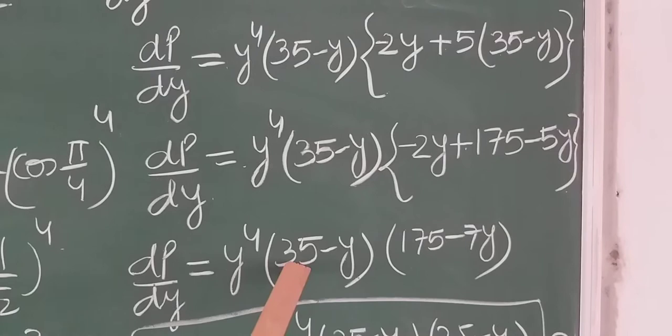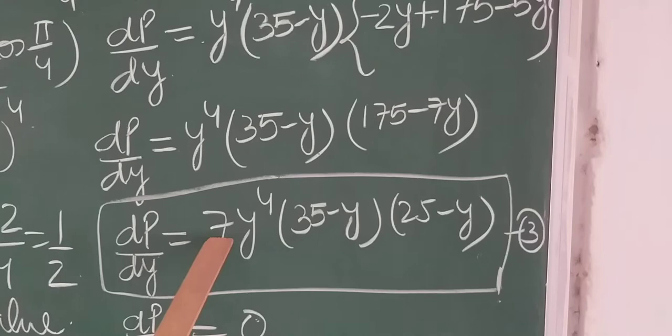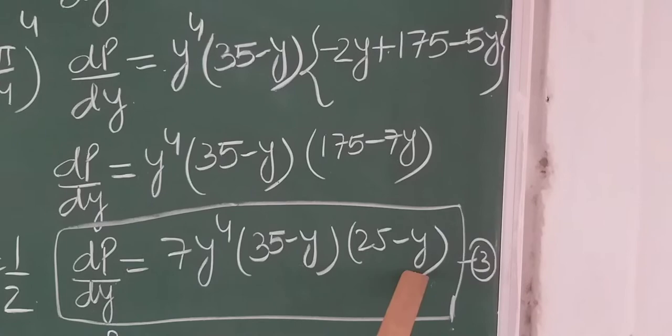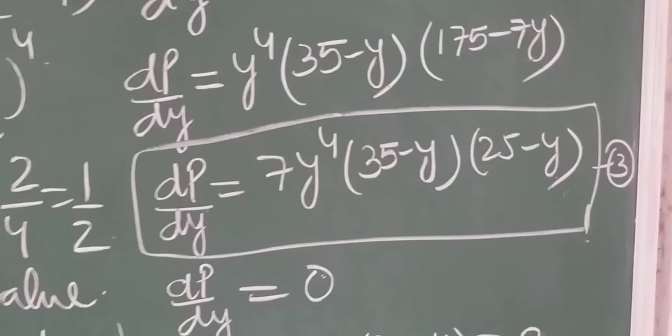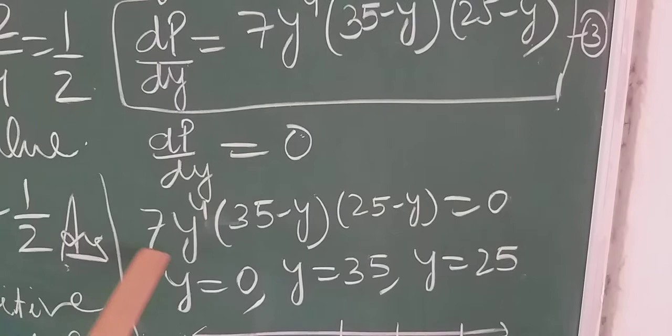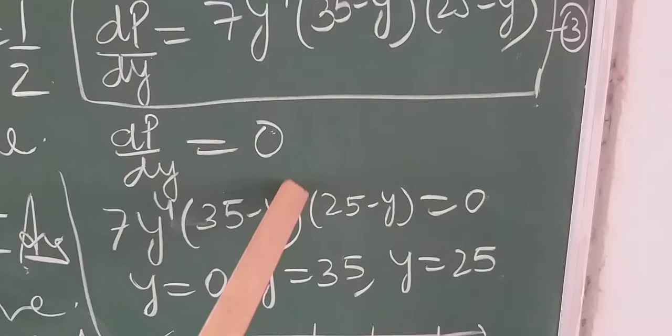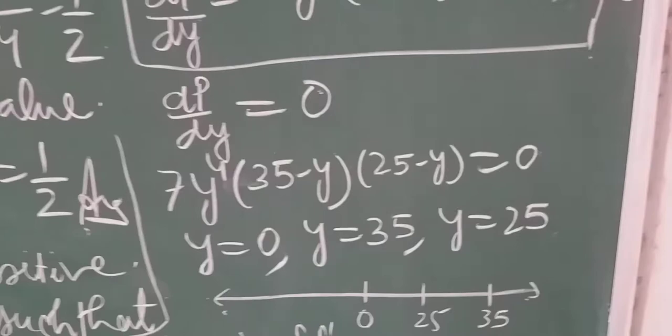So dP/dy = 7y⁴(35−y)(25−y). To find the points of local maxima and local minima, we put dP/dy = 0. Setting each factor to zero: 7y⁴ = 0 gives y = 0; (35−y) = 0 gives y = 35; (25−y) = 0 gives y = 25. So we have three critical points. Arranging on a number line: 0, 25, 35.